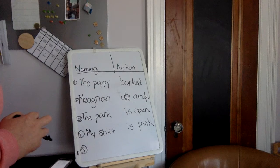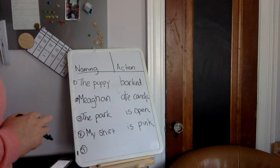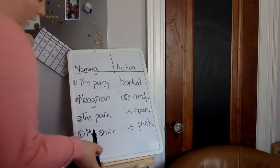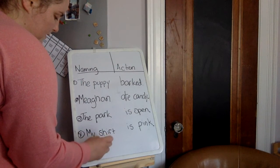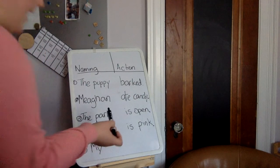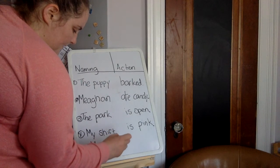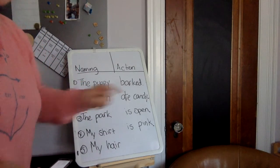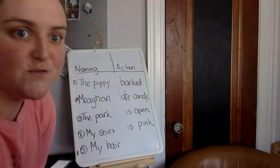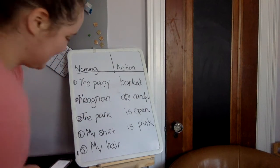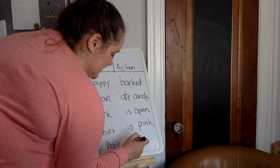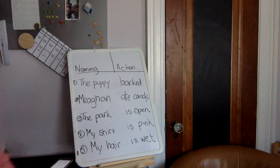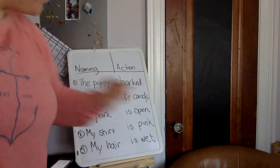Our naming is my hair. That's our naming, my hair. And now we're going to have an action. What's the opposite of dry? Wet. We can say is wet. That's our sentence. My hair is wet.